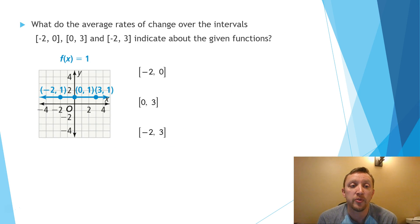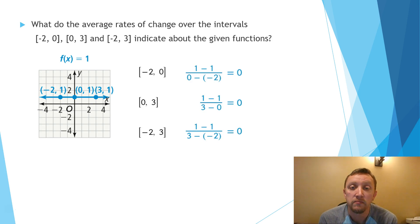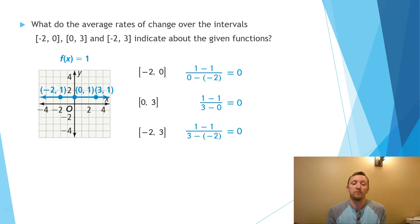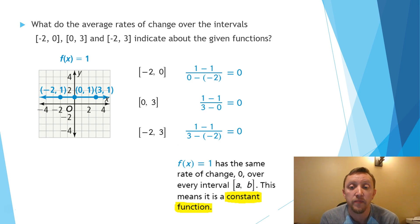Let's look at some examples. The question asks for the average rates of change over the intervals [-2, 0], [0, 3], and [-2, 3]. For this first function, the rate of change is 0 for all three of those intervals — the slope is 0. Since it has the same rate of change of 0 over any interval, we call this a constant function, because the value is constantly the same.